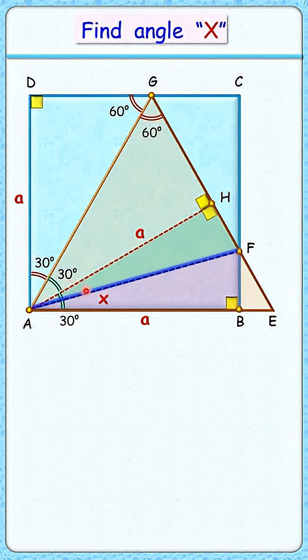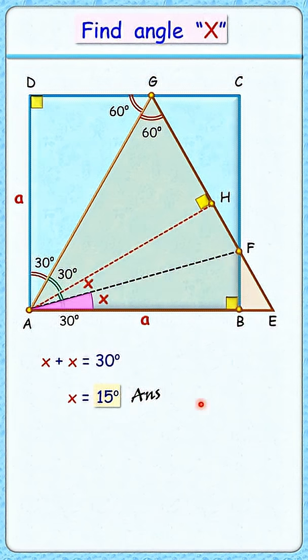So this angle here is also x degrees. But this complete angle is 30, so x plus x is 30 degrees, or x is 15 degrees. And that's our answer.